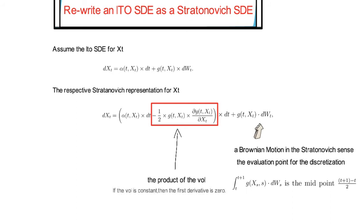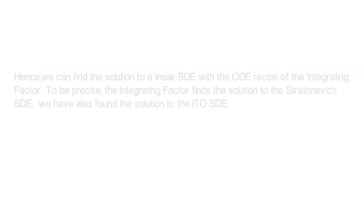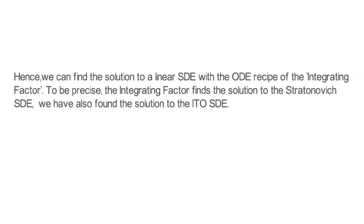So, if the vol is constant, like for a linear SDE or any other Gaussian SDE, then the first derivative of the volatility term is zero. Hence, that tells you already that a linear ITO SDE has a Stratonovich representation that perfectly coincides with the ITO SDE. Hence, also not surprising, we can find the solution to a linear SDE with the ODE recipe of the integrating factor.